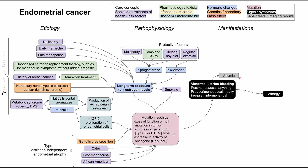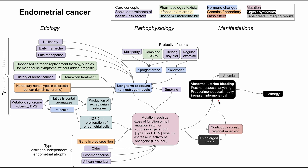Significant uterine bleeding can predispose a patient to anemia and lethargy, which might show up on lab values if the bleeding is more severe. This describes localized disease. When the disease starts to spread, it first spreads contiguously to the region around the endometrium — to the cervix and other layers of the uterus. This regional extension can cause a new set of symptoms including uterine bleeding, an enlarged uterus, pelvic pain, a palpable vaginal mass, or abdominal distension if the uterus is significantly enlarged.